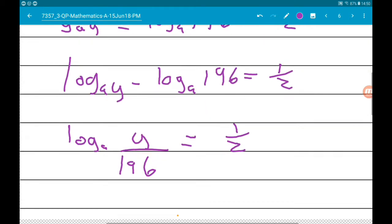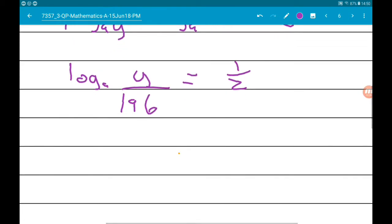So now given that our log has base a, we now raise both sides as a power of a. So that's going to cancel out the log on the left, so we have y over 196 equals a to the power of a half, which is root a.